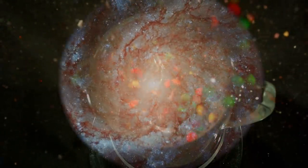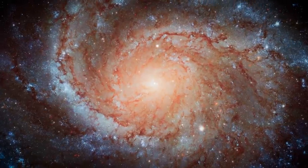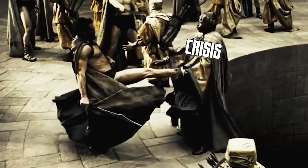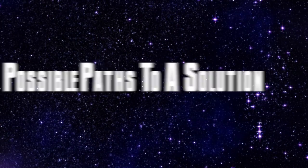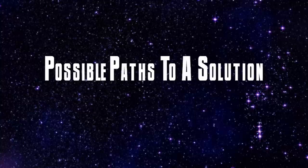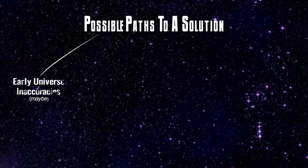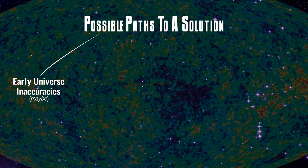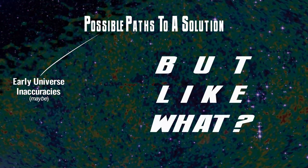It's a big mess. There are a lot of proposed solutions — in the past six years, ever since this crisis first emerged, there have been over 300 published proposed solutions to the crisis. Nobody can agree. One category of solutions says maybe we don't understand something about our early universe measurements — something weird about measuring the CMB, BAO, or Big Bang nucleosynthesis. But you can throw out every single piece of CMB data and the crisis still remains. So what's going on?